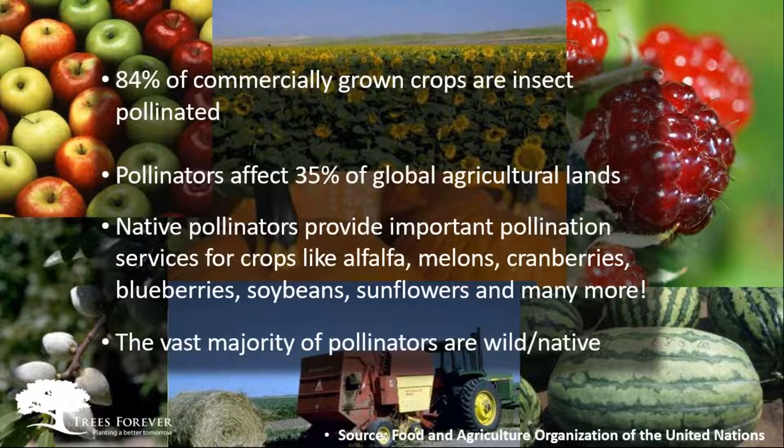A few facts and figures regarding pollinators and our food supply. Roughly 85% of commercially grown crops are insect pollinated. Pollinators affect roughly 35% of global agricultural lands. These are important pollinator services for crops like alfalfa, melons, cranberries, sunflowers, and many more. Keep in mind that the vast majority of pollinators are going to be our wild or native pollinators. We certainly know about managed honeybees for pollination services and honey, but the majority of pollinators are going to be wild native ones.